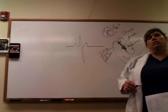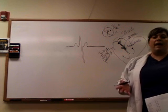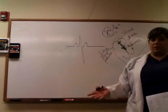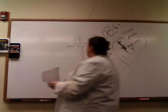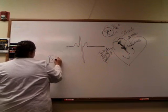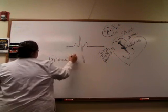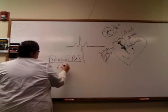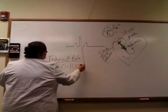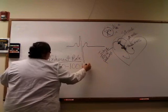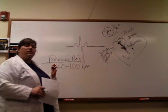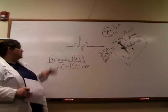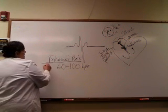We also have inherent rates. Your average heart rate should be sixty to a hundred beats per minute. That is our normal inherent rate — sixty to a hundred beats per minute — telling you how many times the heart beats through a cycle. The SA node has an inherent rate in this range of sixty to a hundred, so when you see a heart rate in that range it's one piece of the puzzle telling you it's probably coming from the SA node.